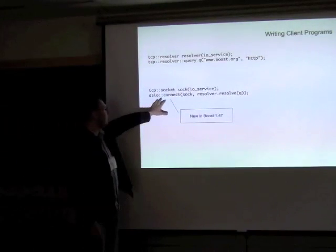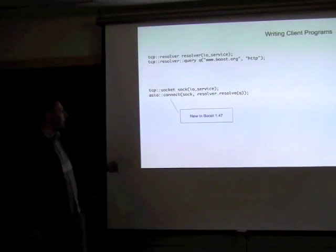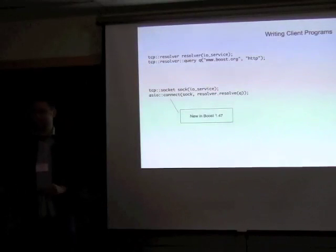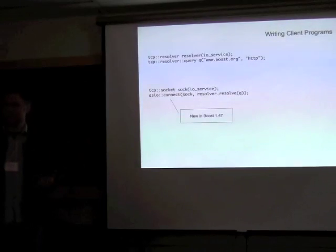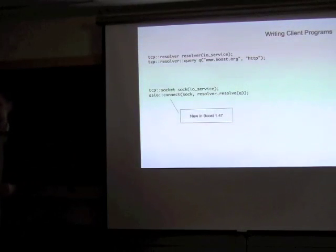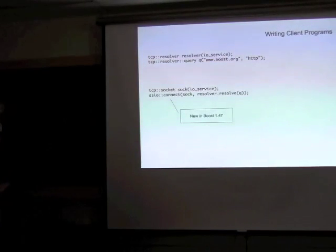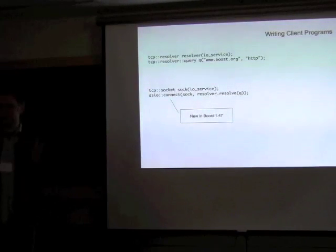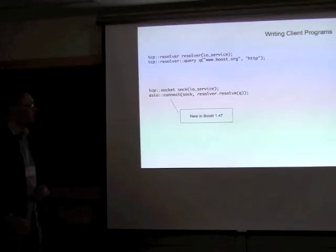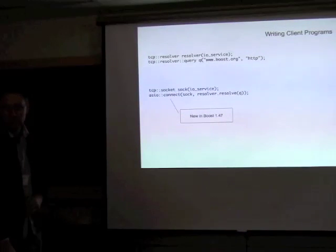In Boost 1.47, I've added a new helper function for this: asio::connect. If you can upgrade to Boost 1.47, I'd recommend just doing it this way, because it's going to be such a common pattern going forward. All it does is take the iterator returned by the resolver and keep trying until one is successful. The end iterator is a default-constructed iterator; this overload assumes that, though there are other overloads where you can pass a pair of iterators.